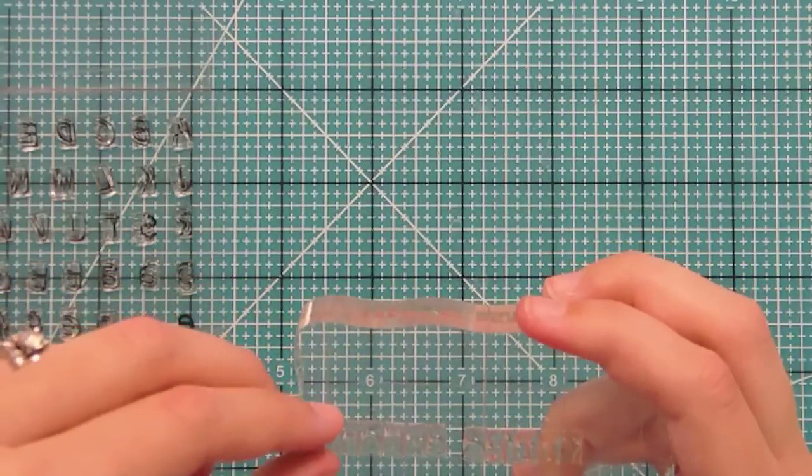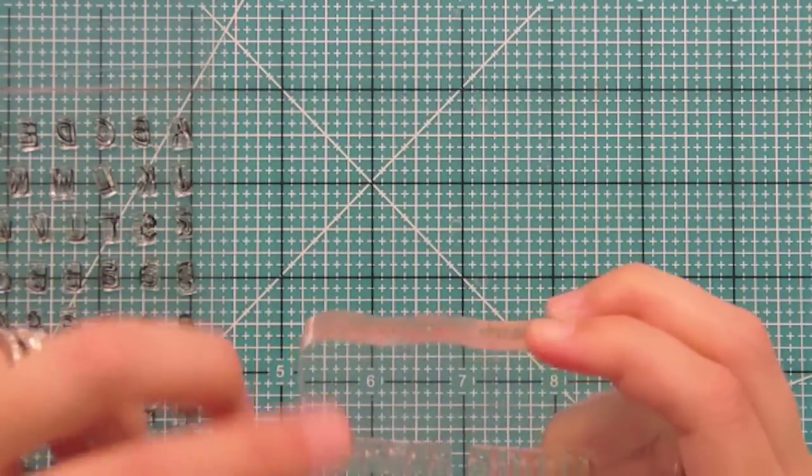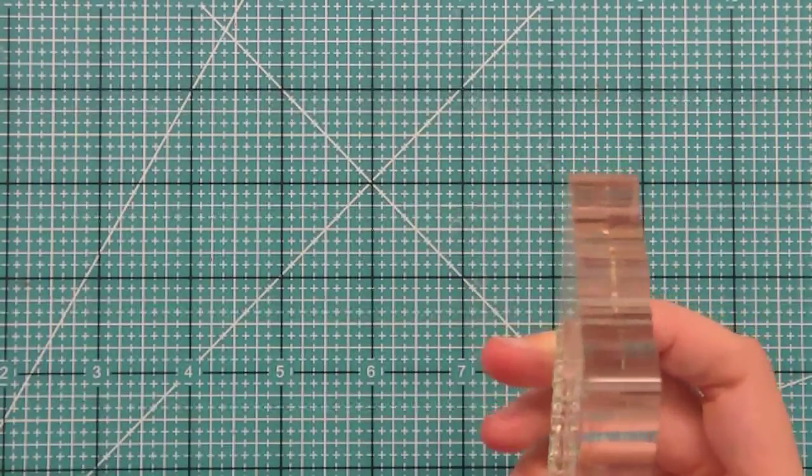And the other thing we have is you can tell we have extra letters of each letter. So we have multiple E's, A's, R's, etc. So you can spell out a lot of phrases without having to leave that blank space and then fill it in later.